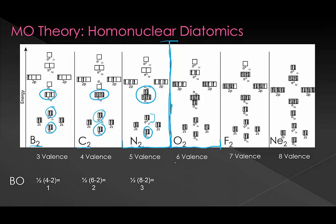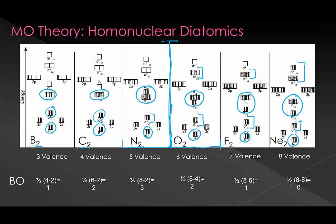At this point you should definitely take a moment and try to do oxygen, fluorine, and neon on your own before continuing. For oxygen, we have eight bonding electrons but now four anti-bonding, which gives a bond order of two. For fluorine, we have eight bonding electrons but now six anti-bonding, giving a bond order of one. And for neon, we have eight bonding and eight anti-bonding, giving a bond order of zero.